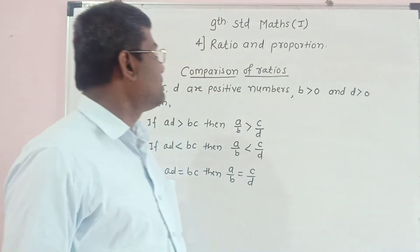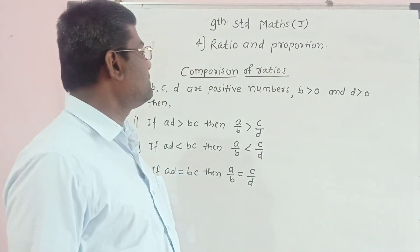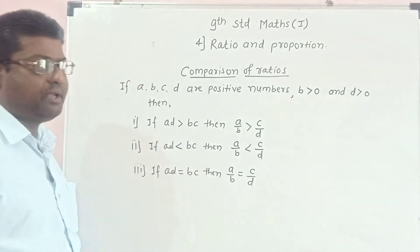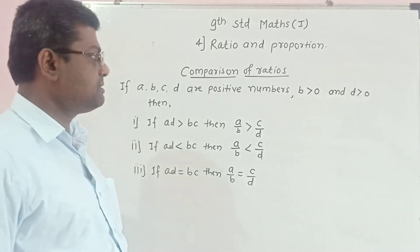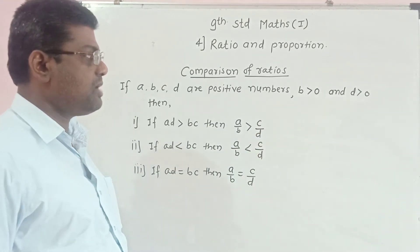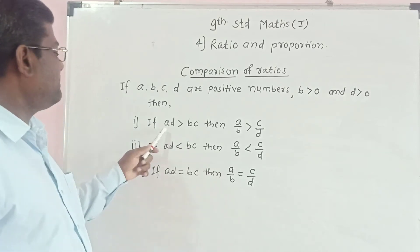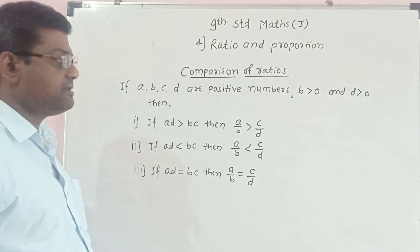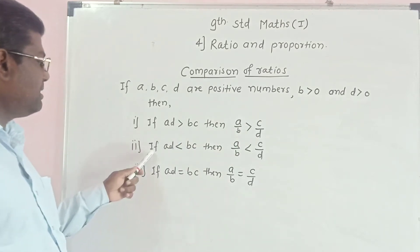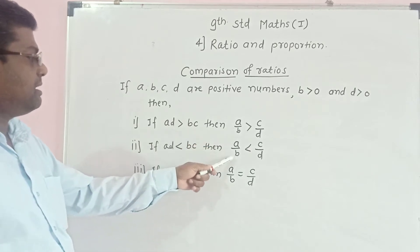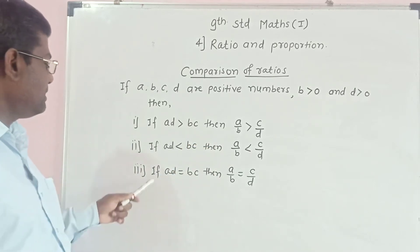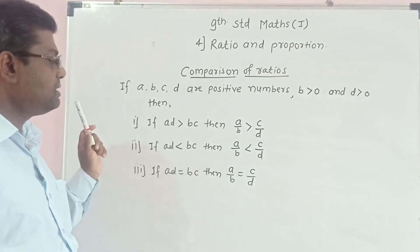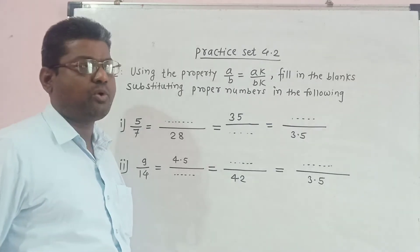Lesson number 4, Ratio and Proportion. Topic: Comparison of Ratios. If A, B, C, D are positive numbers with B greater than 0 and D greater than 0, then if AD is greater than BC, the ratio A upon B is greater than C upon D. If AD is less than BC, then A upon B is less than C upon D. If AD is equal to BC, then A upon B is equal to C upon D. This is set 4.2.